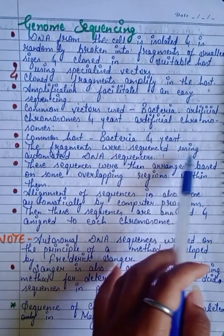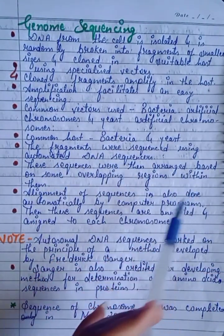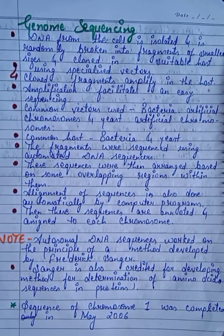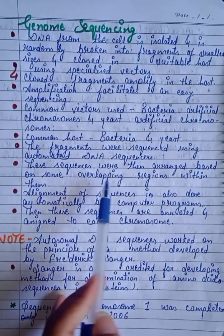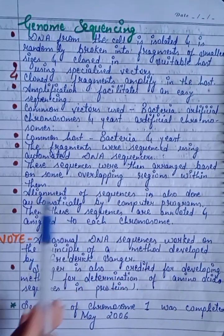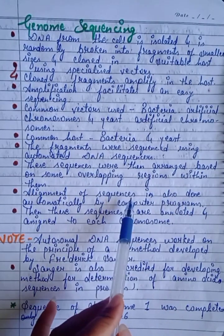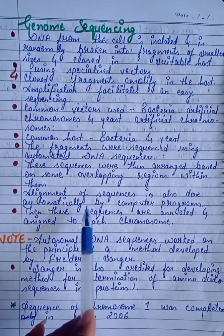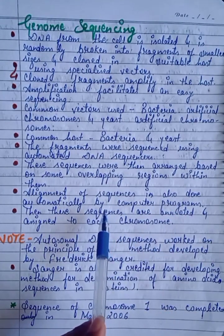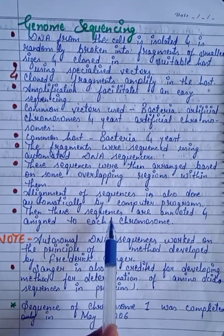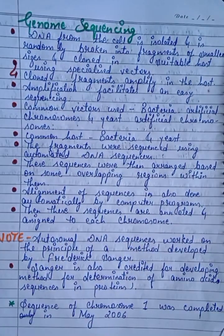Fragments are sequenced using automated DNA sequencing. These sequences are then arranged based on overlapping regions within them. The alignment of sequences is also done automatically by computer programs. Then these sequences are annotated and assigned to each chromosome.